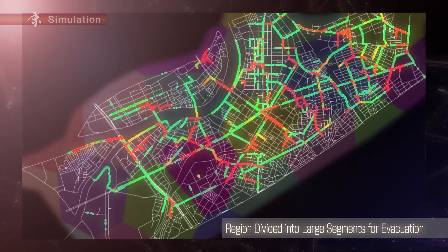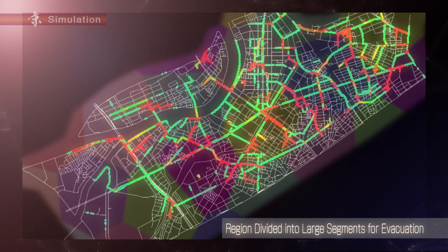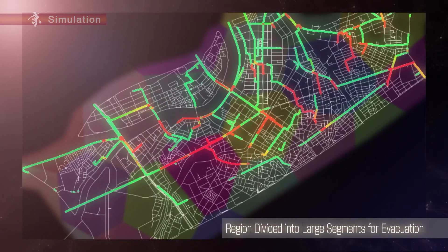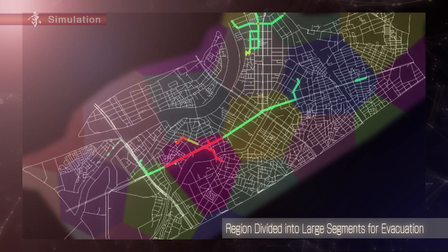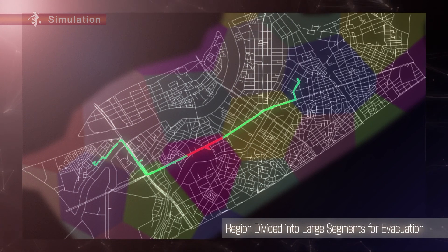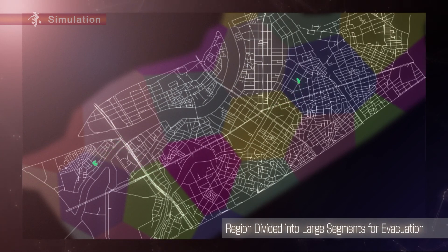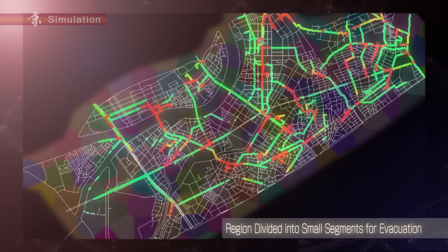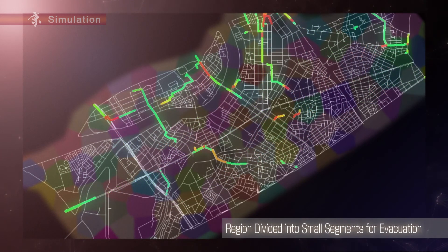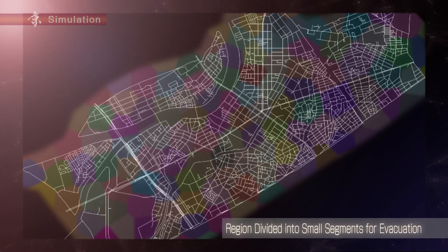Seen here, a region was divided into town-sized segments, and the residents were given generalized instructions for evacuation. The areas congested with people are shown in red. As seen here, the residents can't efficiently get to the designated shelter — the dots representing people remain, because they take a long time to get to the shelter. On the other hand, when the region was divided into neighborhood-sized segments and the residents were given detailed instructions for evacuation, they can move smoothly to the designated shelter. Quickly, the dots representing people disappear.